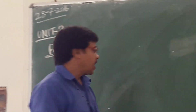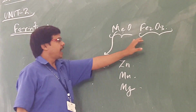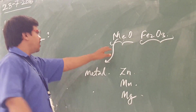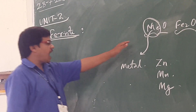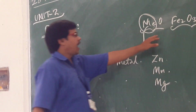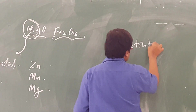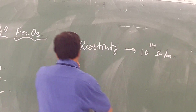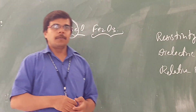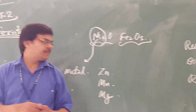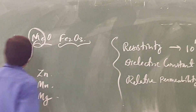If you consider the chemical composition, it is metal oxide and ferrite oxide Fe2O3. For the metal, you can go for zinc or magnesium. The properties of ferrite include resistance of 10 to the power 14 ohm per meter, dielectric constant of 10 to 50, and relative permeability of 1000.